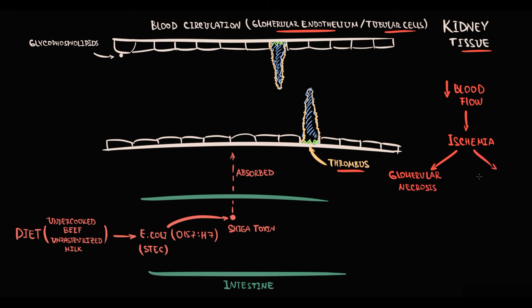Ischemia of tubular cells triggers apoptosis, and altogether this causes acute kidney injury that manifests with increased blood creatinine level and causes increased urea.